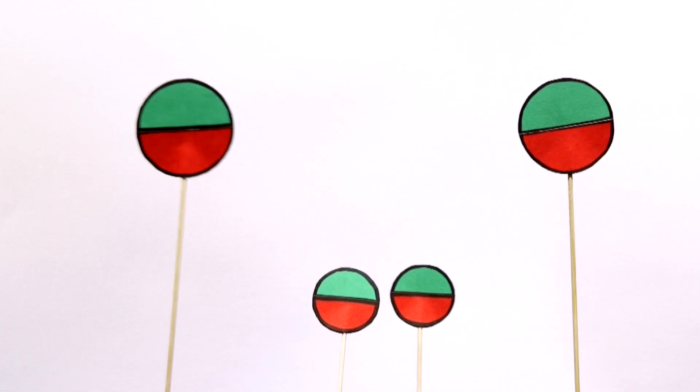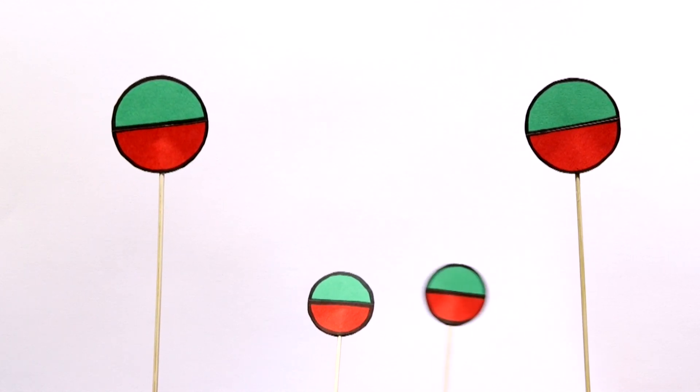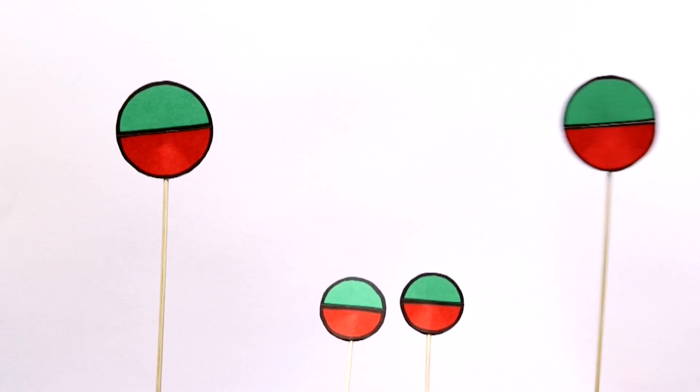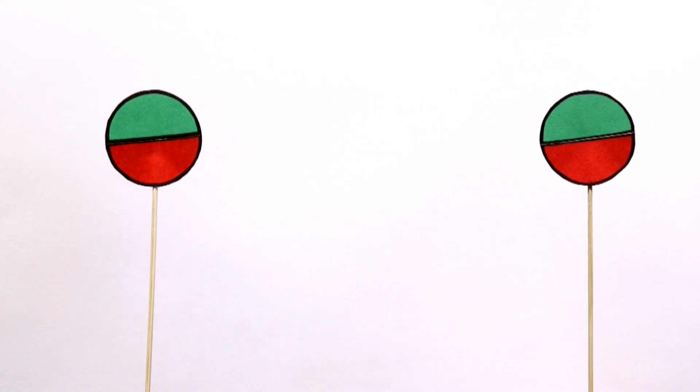So now the first electron is entangled with a photon that's entangled with another photon that's entangled with the second electron. You've now got two entangled electrons over a kilometer apart.